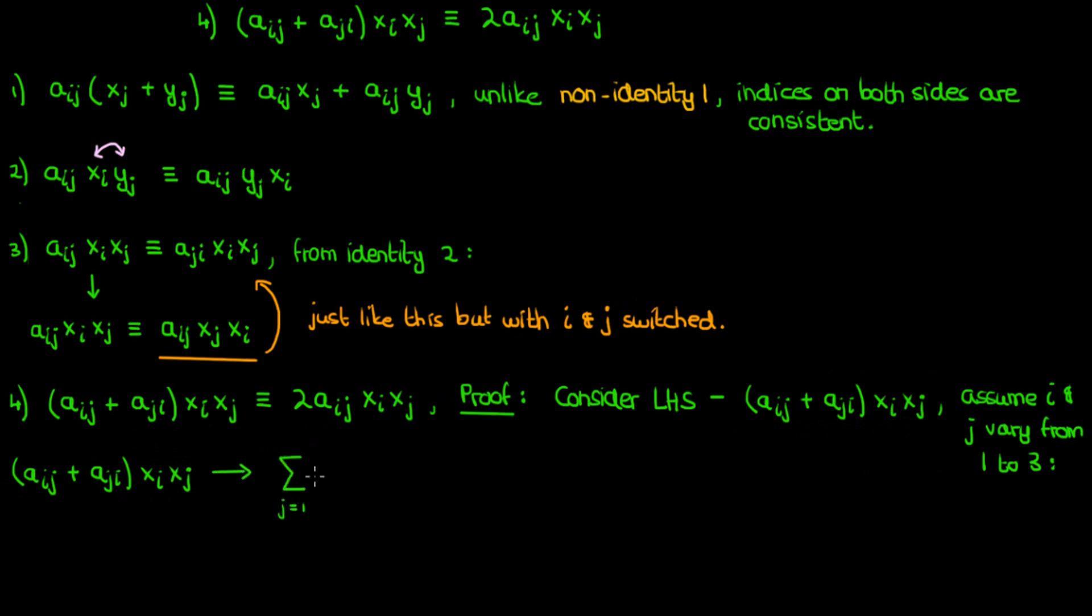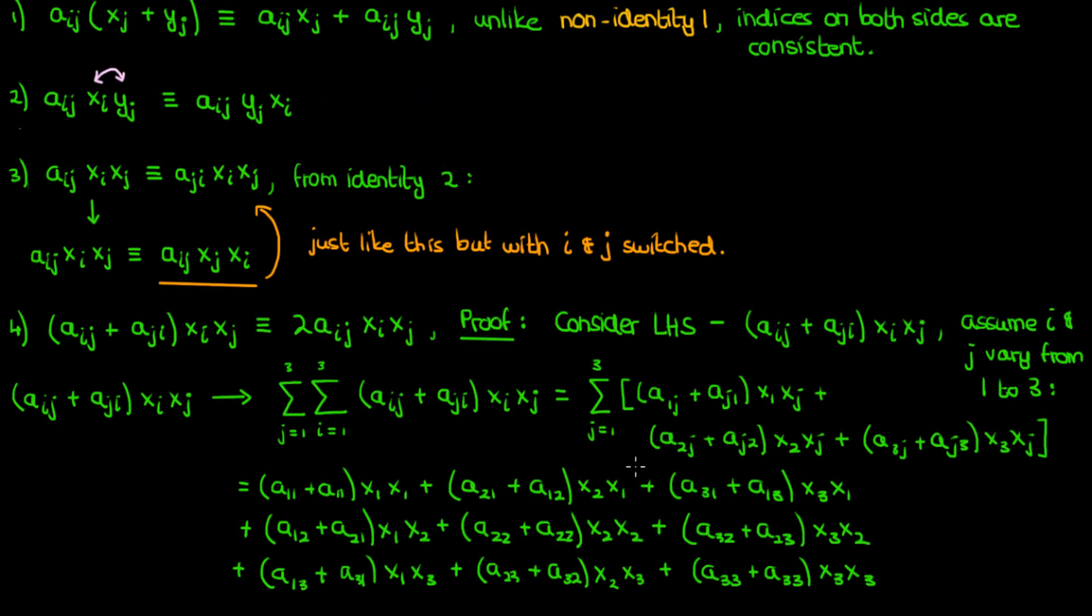Now since i and j are being summed over, we can add these sigmas in front. We can then go ahead and take care of the first summation, and this is what we'll get. Let's now apply the second summation.